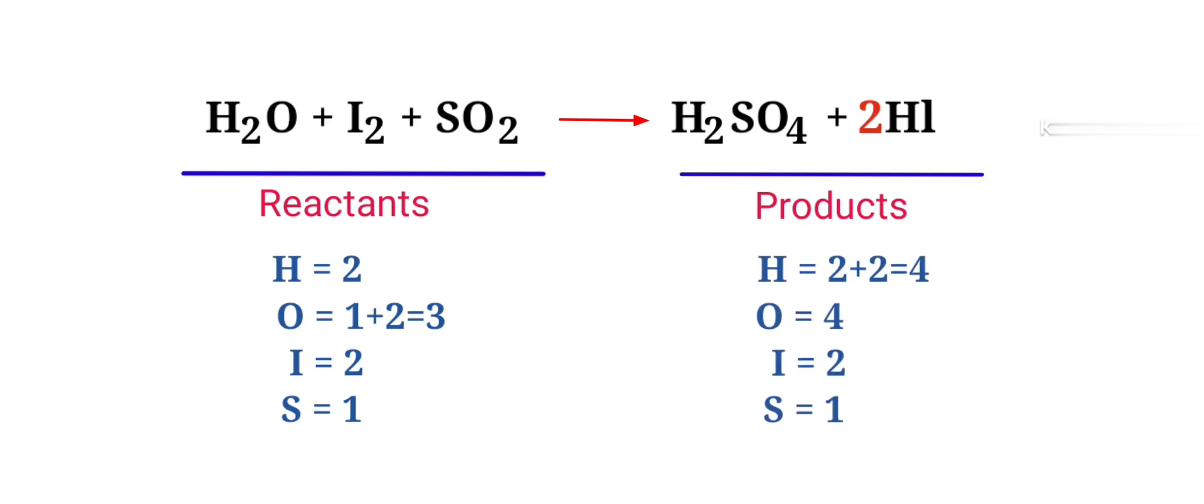The iodine atoms are balanced. Now we need to balance the hydrogen and oxygen atoms. To do this, we need to put a coefficient of 2 in front of H2O.